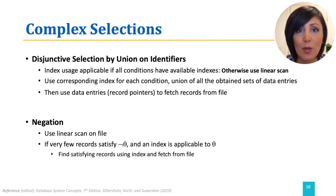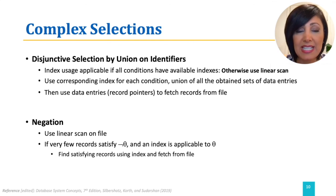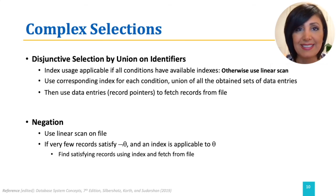Negation is best handled using a linear scan on the file. The only condition under which negation could use an index is when we know the number of records satisfying the condition is very limited and we have an applicable index for the keys in the condition. In that case, we find the data entries satisfying the initial condition, deduct the negated records from that, and find the satisfying records using those data entries.